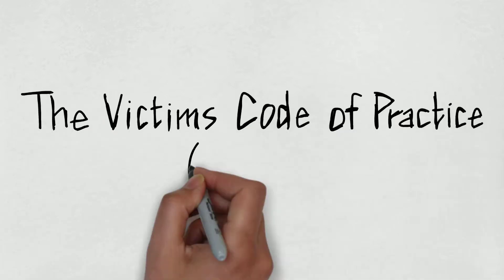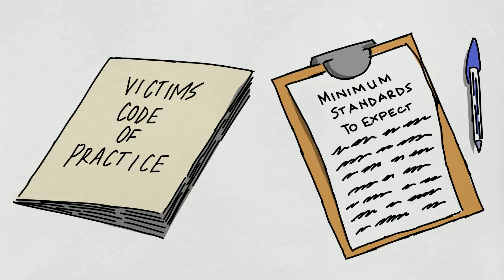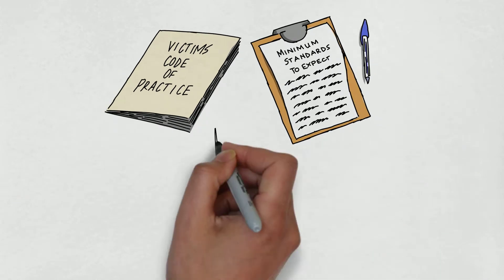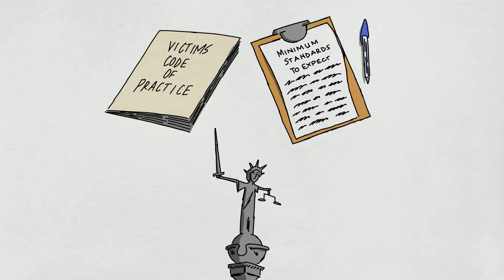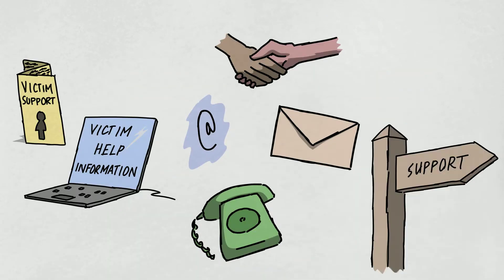The Victim's Code of Practice, VCOP. The VCOP sets out the minimum standards of service that victims of crime can expect to receive from criminal justice agencies and specifies what types of contact, information and support they are entitled to.